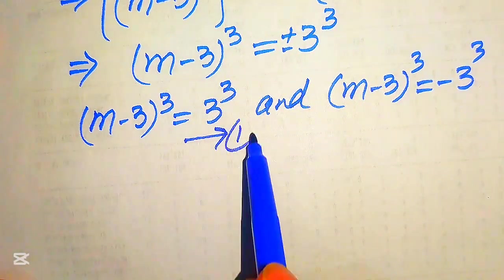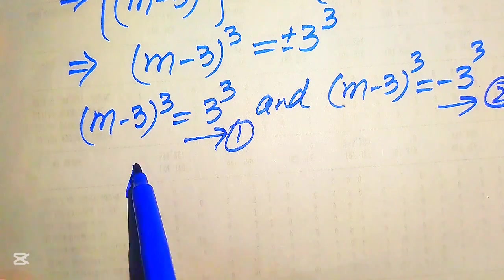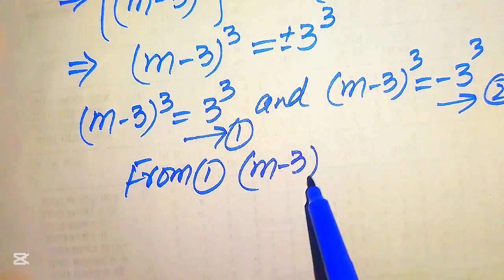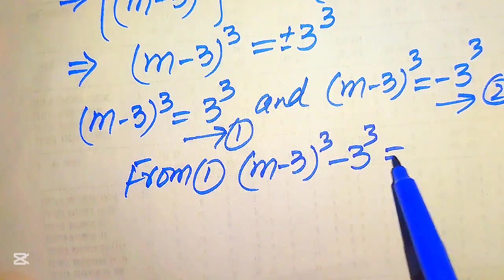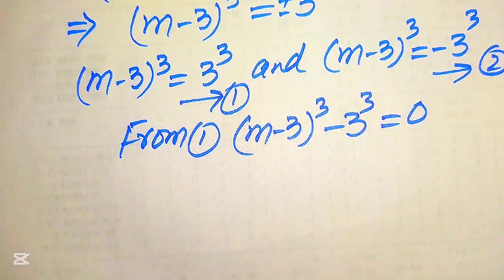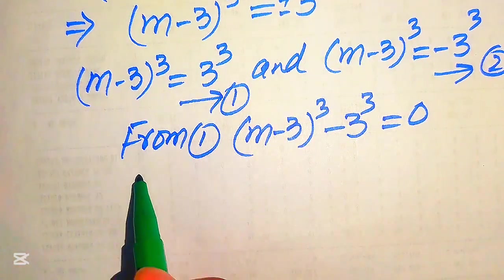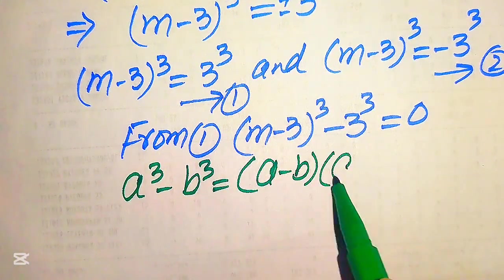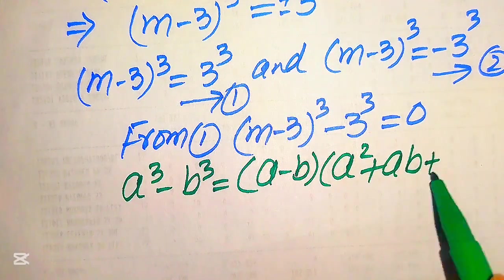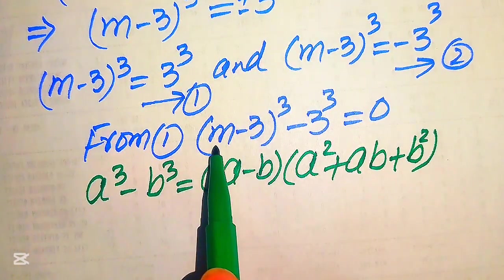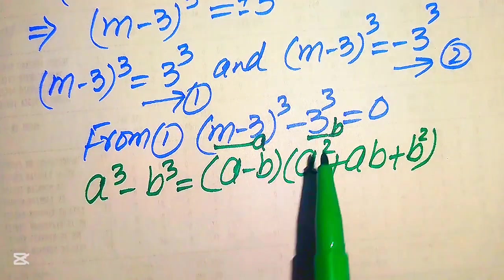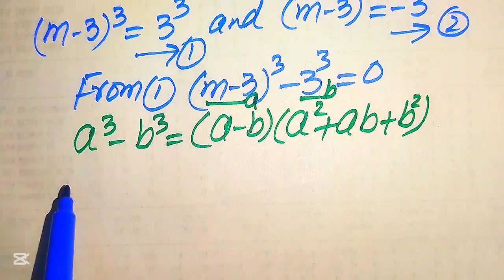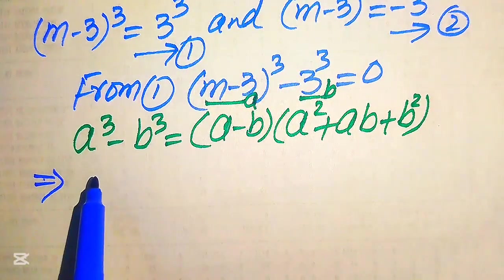We call the positive case Equation 1 and the negative case Equation 2. From Equation 1, we move the right-hand side to the left to get (m minus 3)³ minus 3³ = 0. We apply the cubic difference formula: a³ minus b³ equals (a minus b)(a² plus ab plus b²). Here a = (m minus 3) and b = 3, and we substitute these into the formula.